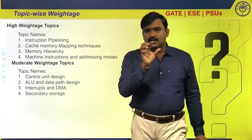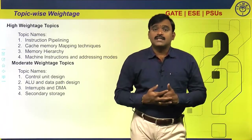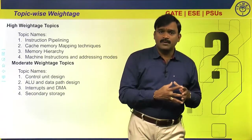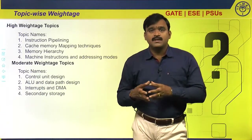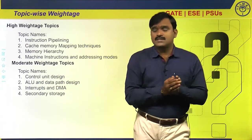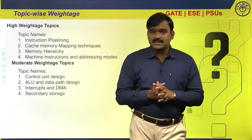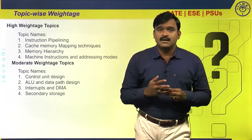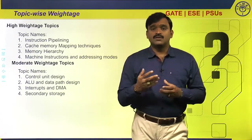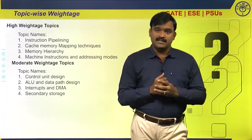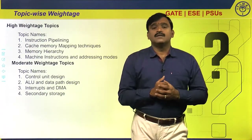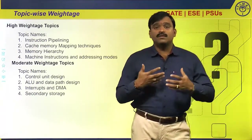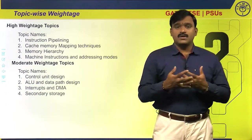In cache-memory mapping techniques, you need to find the tag bits and the extra memory required for storing tag information — in direct mapping, set-associative mapping, and fully-associative mapping. Also understand different types of cache misses: compulsory miss (cold start miss), capacity miss, and conflict misses in direct and set-associative mapping. Focus on how to find the number of conflict misses and capacity misses.